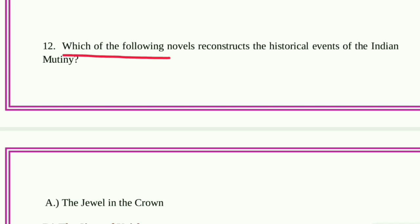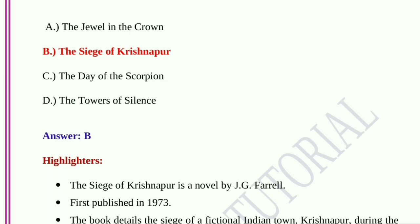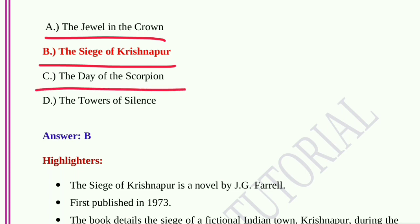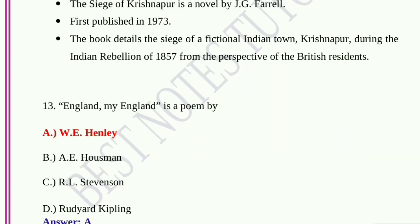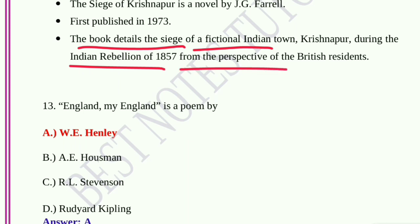Question number twelve: Which of the following novels reconstructs the historical events of the Indian Mutiny? Option A, The Jewel in the Crown; option B, The Siege of Krishnapur; option C, The Day of the Scorpion; option D, The Towers of Silence. Option B, The Siege of Krishnapur, is the correct answer. It is a novel by J.G. Farrell, first published in 1973. The book details the siege of a fictional Indian town, Krishnapur, during the Indian Rebellion of 1857, from the perspective of British residents.